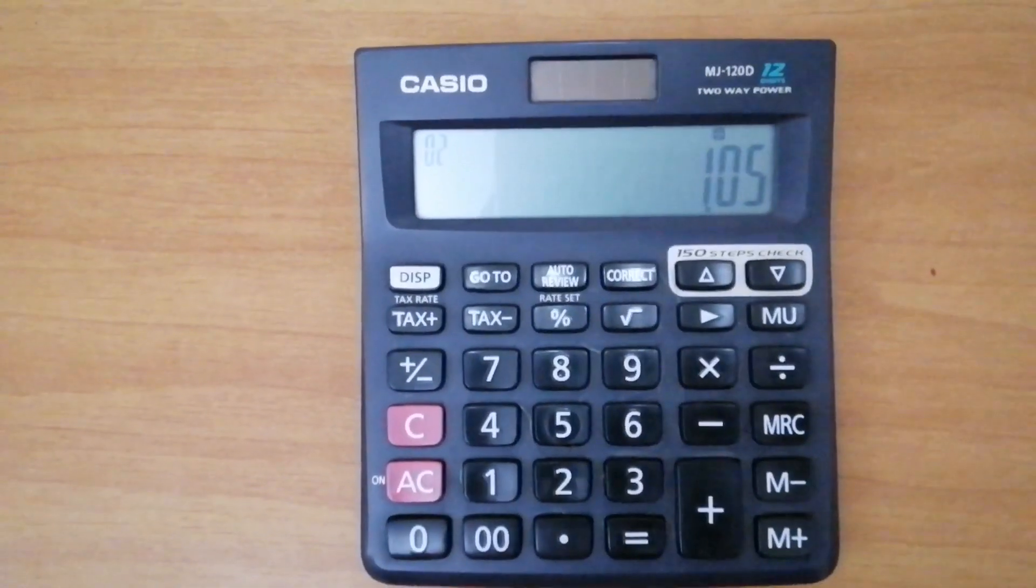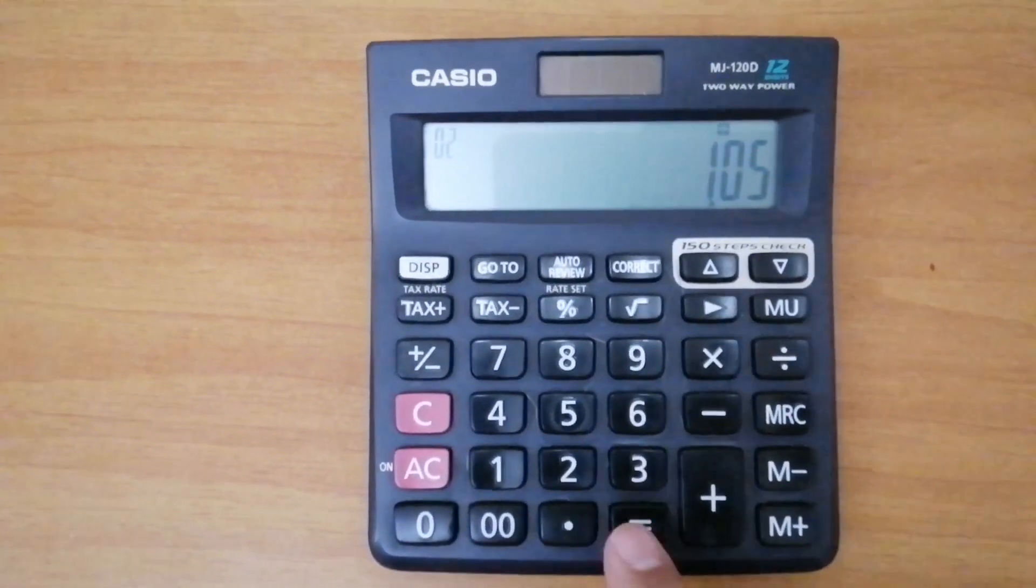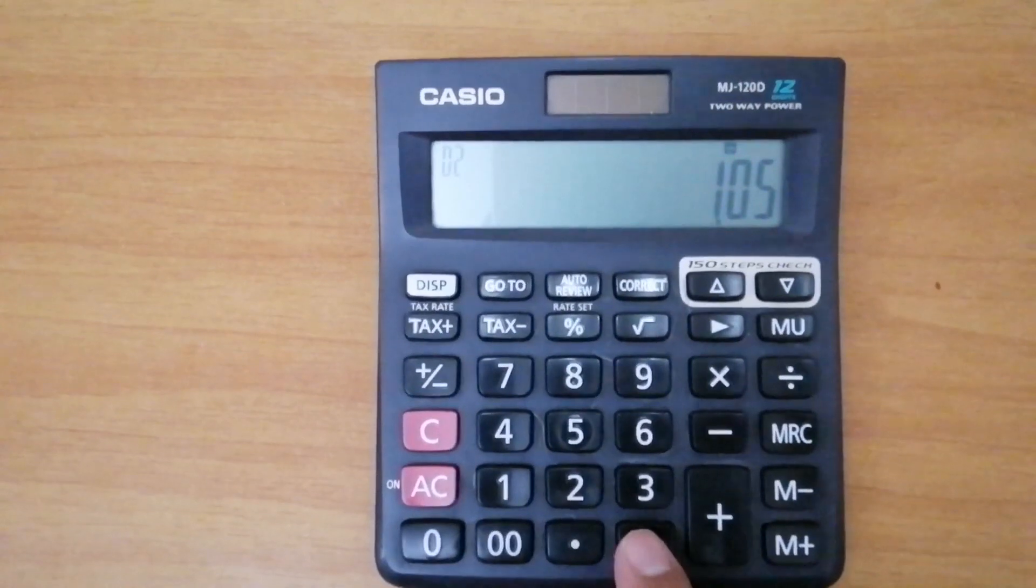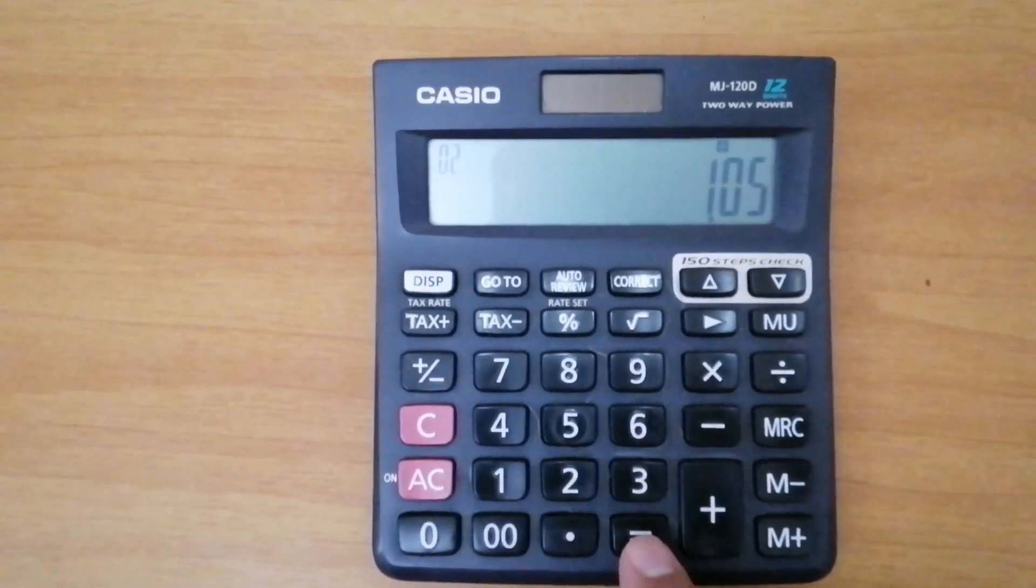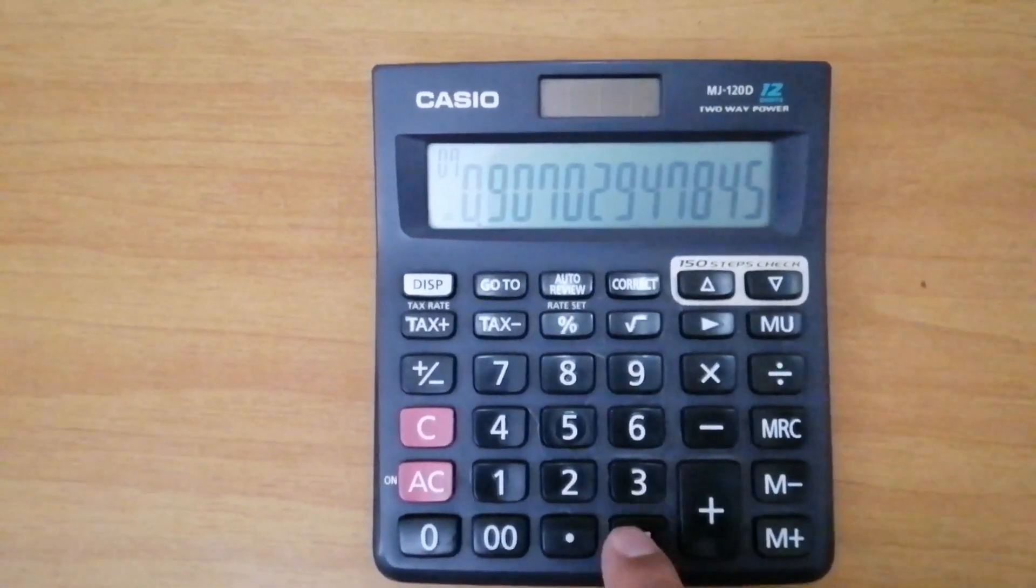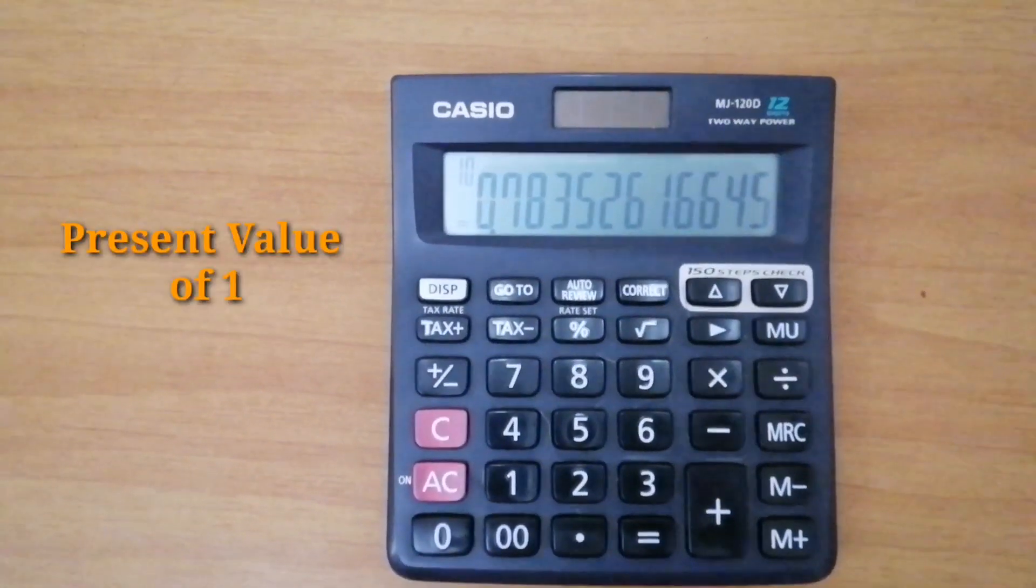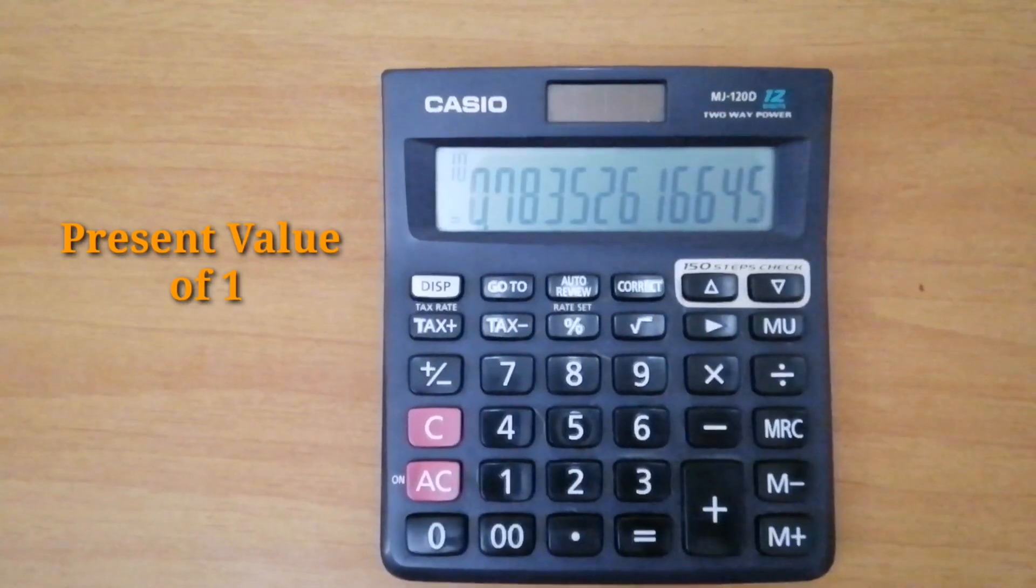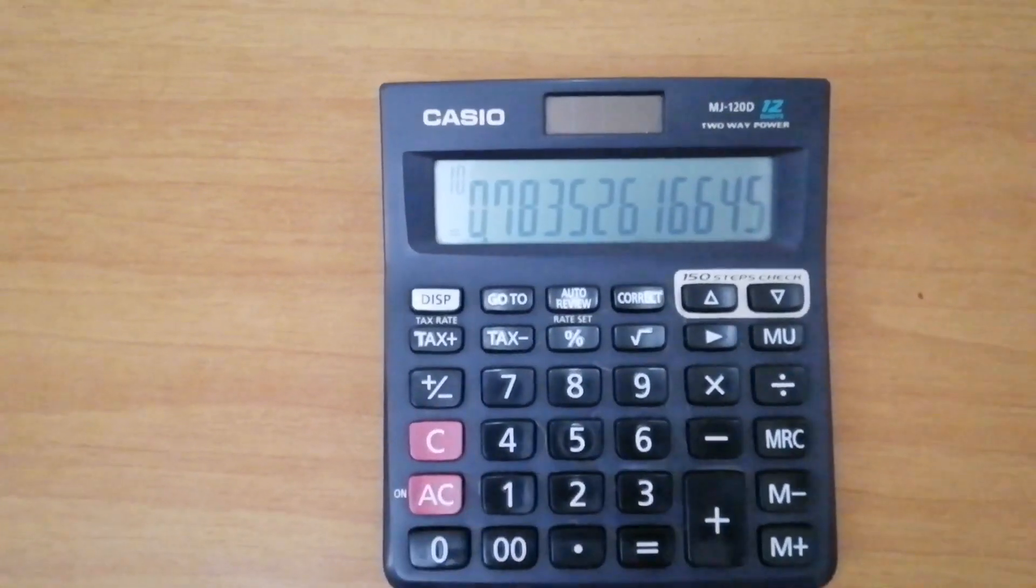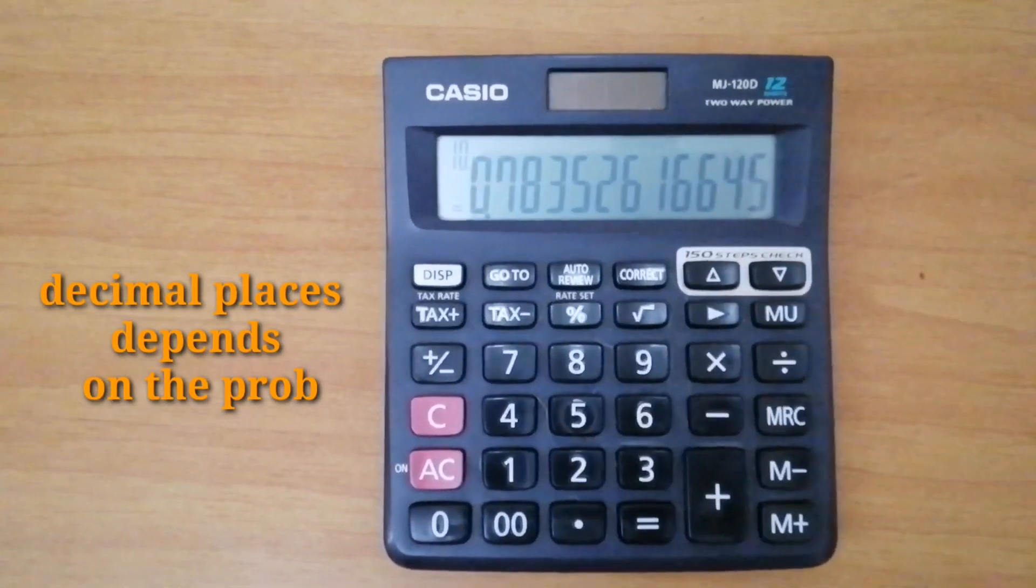Then if it's 5 years period, just 5 times click equal sign, 1, 2, 3, 4, 5. So, here you have already the 0.7835, 4 decimal places but that depends on the problem.